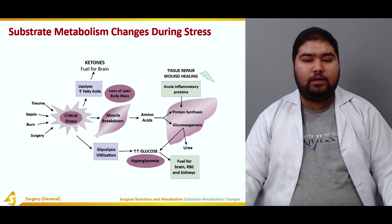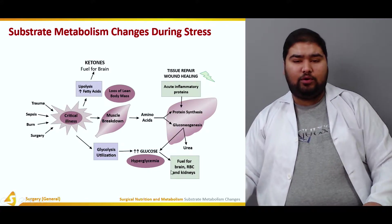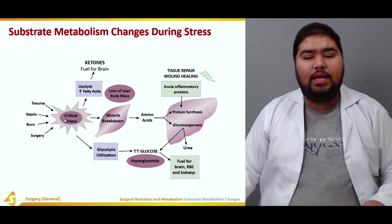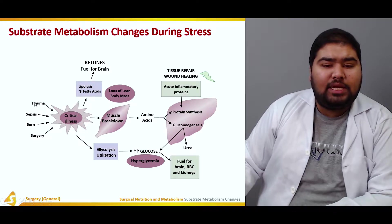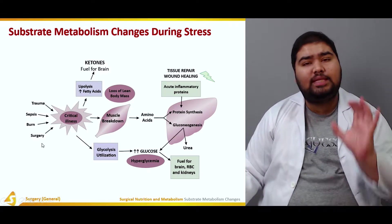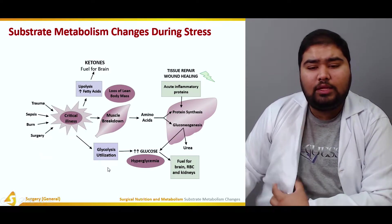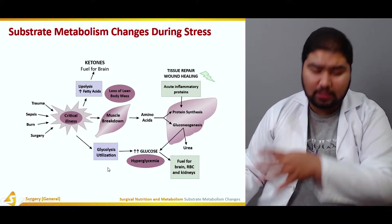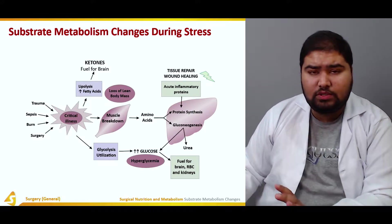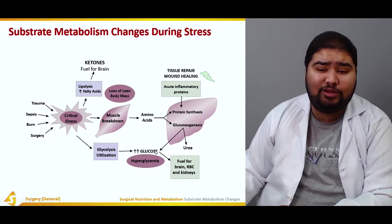Let's start with carbohydrates. In a critical illness — whether due to trauma, sepsis, burn, or surgery — a stressor has come to the body. First, there would be glycolysis: the glycogen stores in the body would be released, leading to glycolysis and utilization that results in an increase in blood glucose.